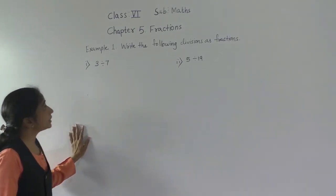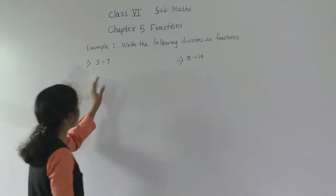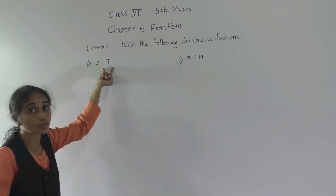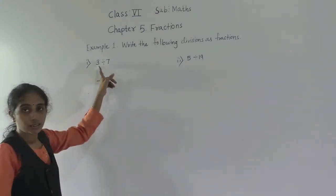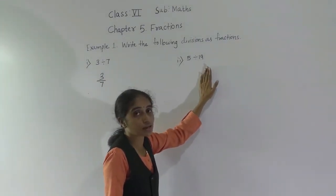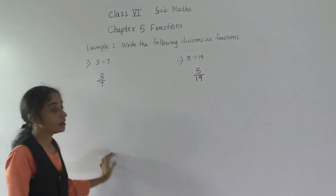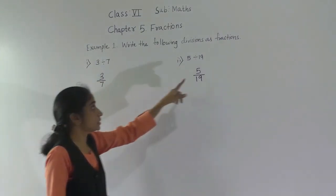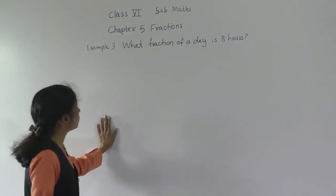Let's solve example 1: Write the following divisions as a fraction. 3 divided by 7 — how to write as a fraction? 3 upon 7. 5 divided by 19 — 5 upon 19. The top part is called the numerator and the bottom part is called the denominator.